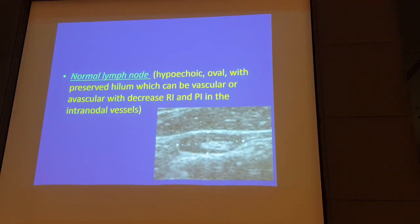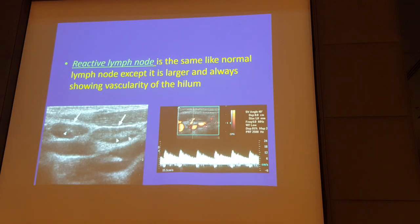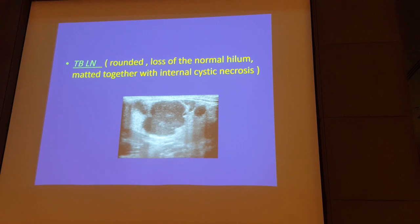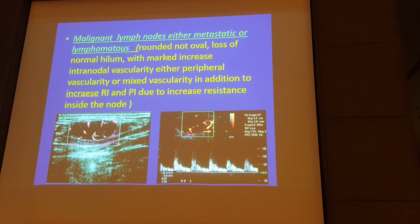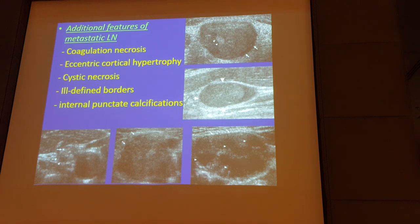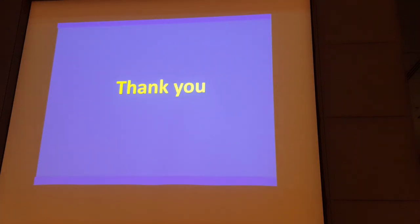In conclusion: normal lymph nodes are hypoechoic with preserved hilum, avascular or with flow only in the hilum. Reactive lymph nodes are similar but larger than 9 mm short axis. Tuberculous lymph nodes most importantly show nodal matting. Malignant lymph nodes show increased resistance index on spectral Doppler and peripheral or mixed vascularity on color Doppler. Additional features of metastatic lymph nodes include coagulation necrosis, eccentric cortical hypertrophy, cystic necrosis, ill-defined outline, and calcifications in thyroid carcinoma cases. Thank you very much.